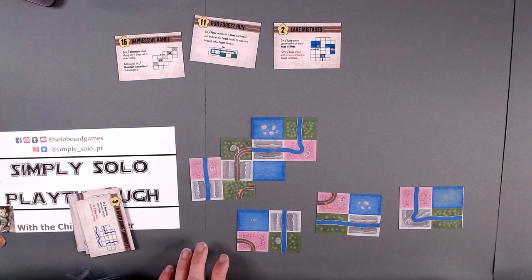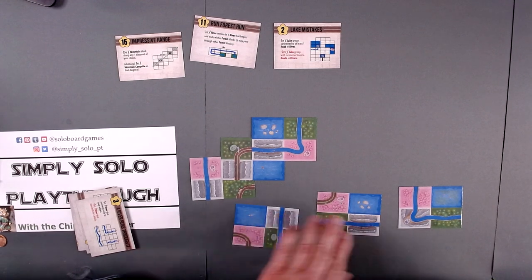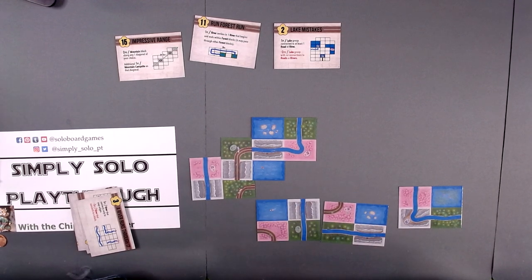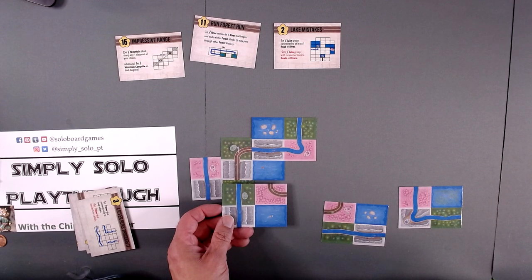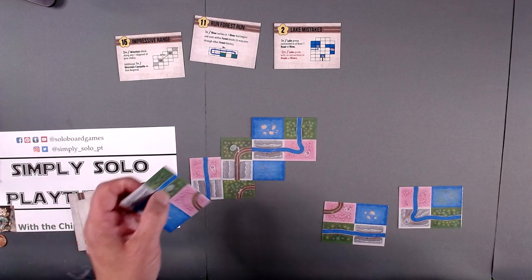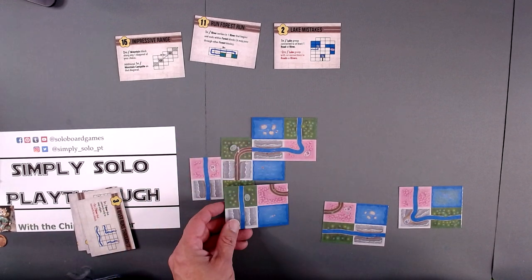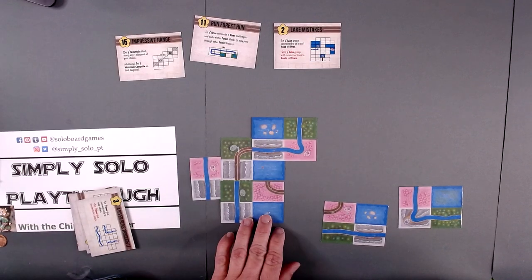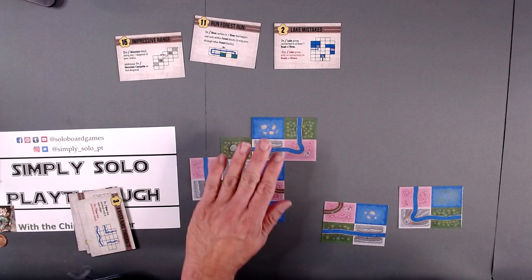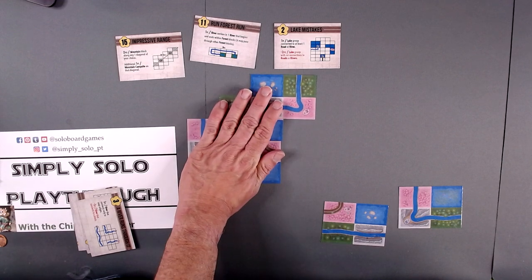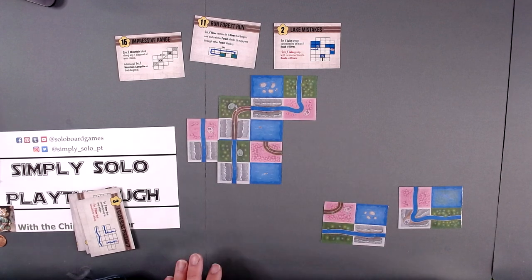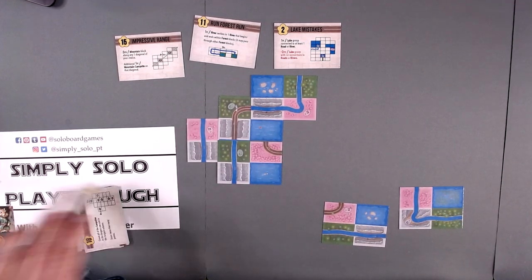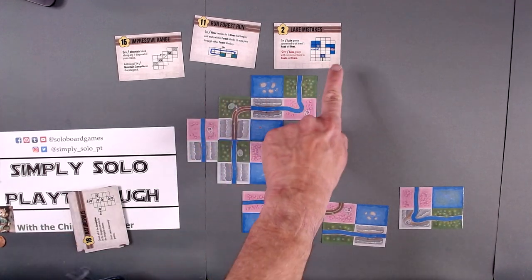We still have to make sure we do a Lake Mistake, which I guess we're going to do right here. That takes care of Lake Mistake because you don't want the negative two points.